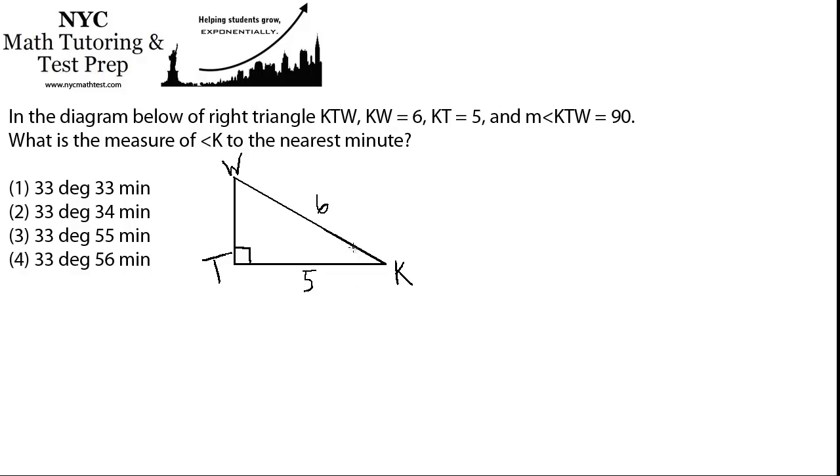We can use what's called DMS, or degrees, minutes, and seconds. So we can be really specific about how many degrees an angle is by saying it in degrees, minutes, and seconds, and there's 60 minutes in a degree and 60 seconds in a minute, just like time.